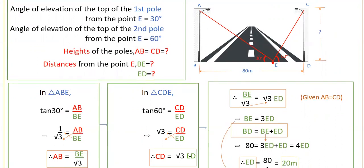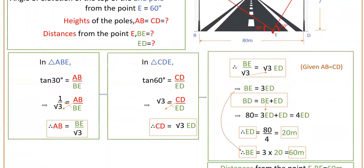Setting BE/√3 = √3 × ED and cross-multiplying gives BE = 3 × ED. Also, BD = BE + ED, and BD is given as 80 meters. So 80 = 3·ED + ED = 4·ED, therefore ED = 80/4 = 20 meters.